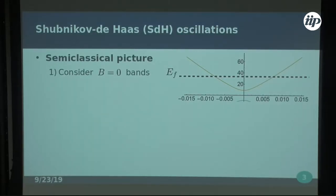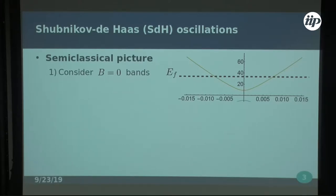What are Shubnikov-De Haas oscillations? A good way to see them is through the semi-classical picture. They are periodical oscillations in conductivity when you raise or change the magnetic field. You get peaks on your conductivity or resistivity whenever you sweep the magnetic field. Those peaks happen because when you apply a magnetic field, you Landau-ize your system, so you can only conduct through these quantized Landau levels. We're mostly going to talk about 2DEGs.